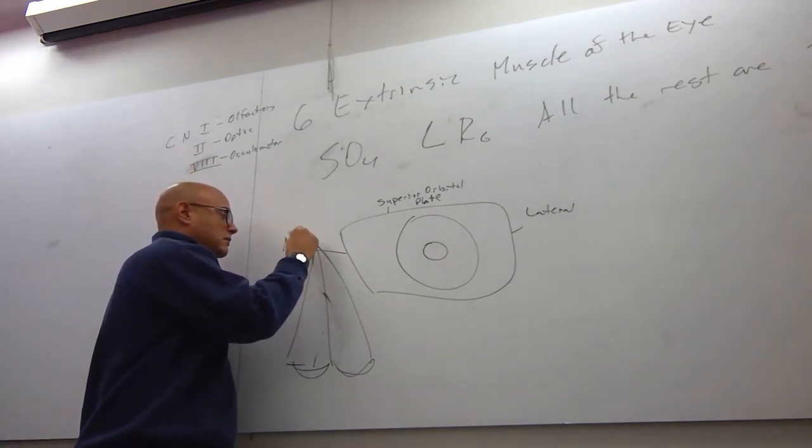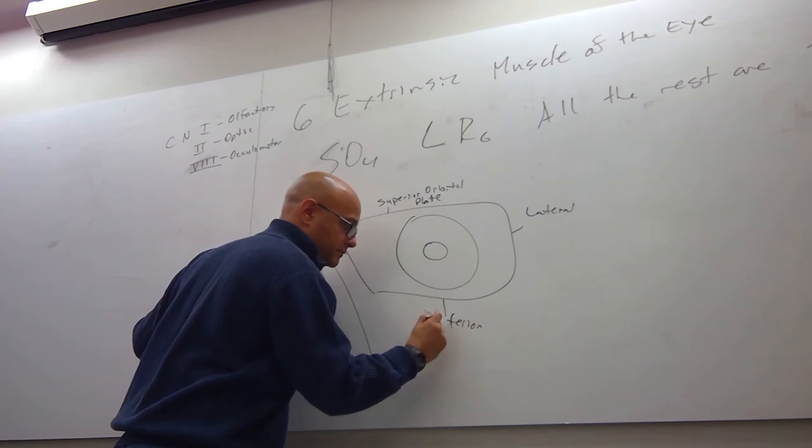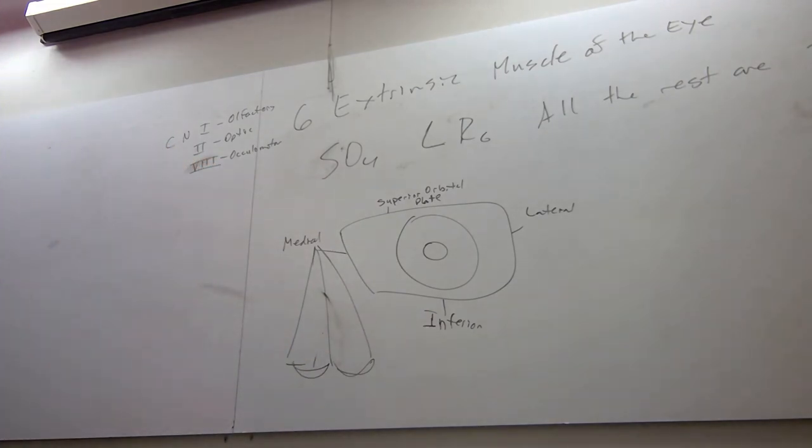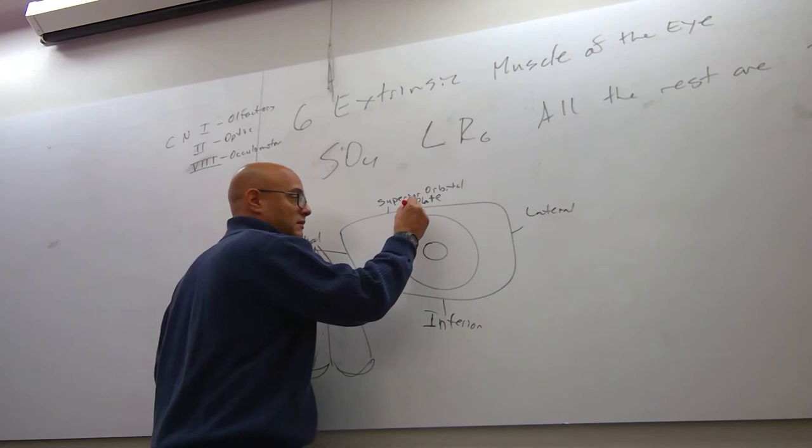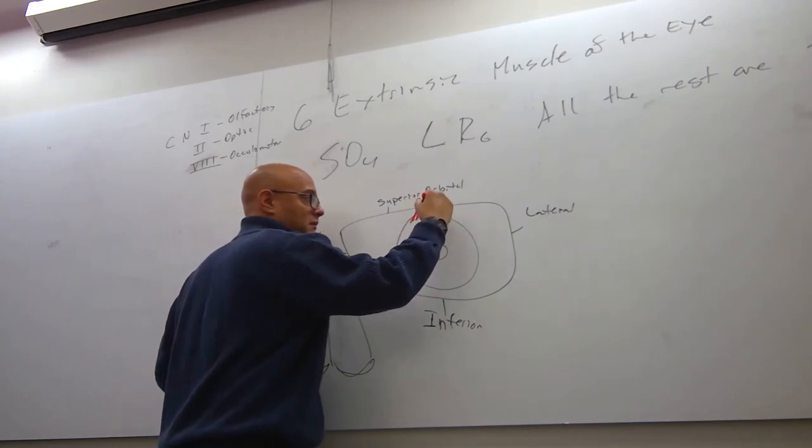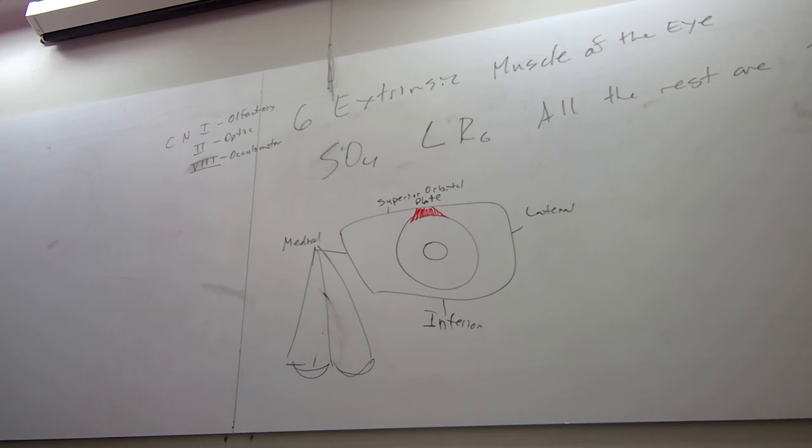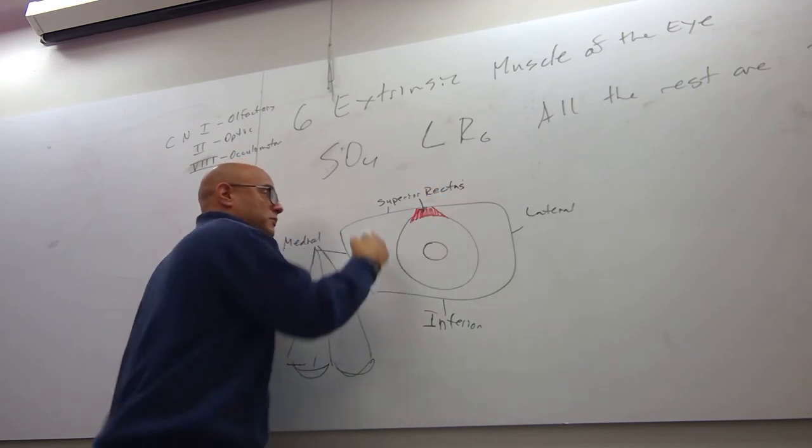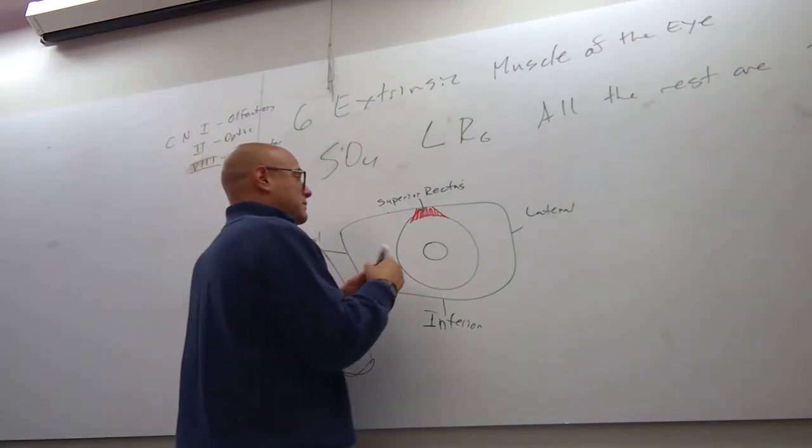I know you guys are probably dreading. Oh my god, is he coming back into bone? Now watch. There's a muscle that comes from the superior orbital plate that attaches to the eye. What do you think we call that muscle? Superior rectus. Coming off the superior orbital plate. And if I have a superior rectus, it's going to pull the eyeball up or elevate the eyeball.